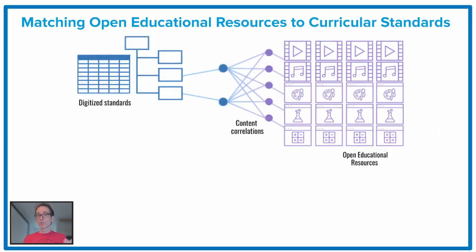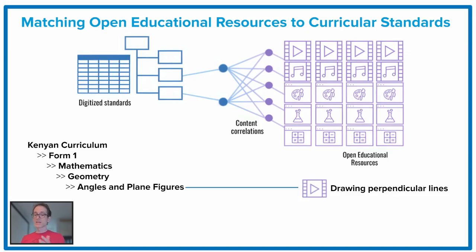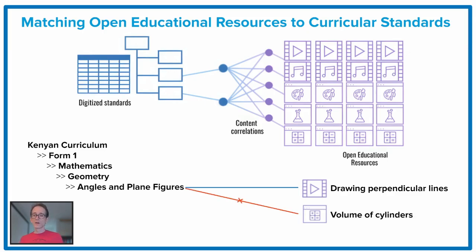First, to get a bit more specific about what we mean by matching content to standards: if we have a set of digitized standards, which we can think of as a tree of topics, and we have a large library of open educational resources, the goal is to find correlations between a topic and specific resources from that library. Consider a specific place within the taxonomy of a national curriculum — the goal is to recommend to the curation expert top content that would help to support teaching or learning that specific concept or objective. So that might mean saying that a specific video on drawing perpendicular lines is relevant and could support this learning objective, whereas an exercise on volume of cylinders maybe is less relevant and we wouldn't recommend that to the curricular expert for inclusion in that topic.